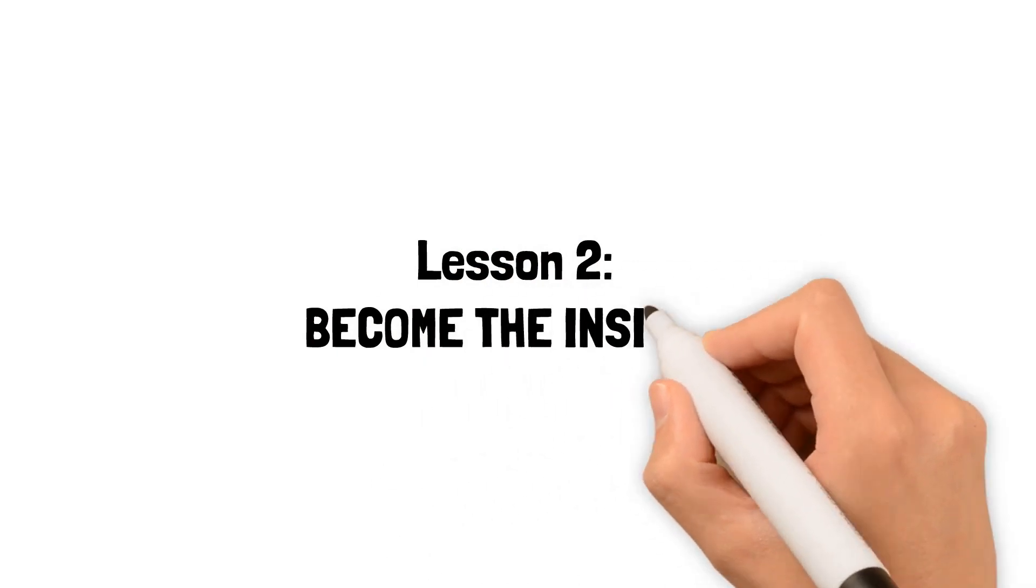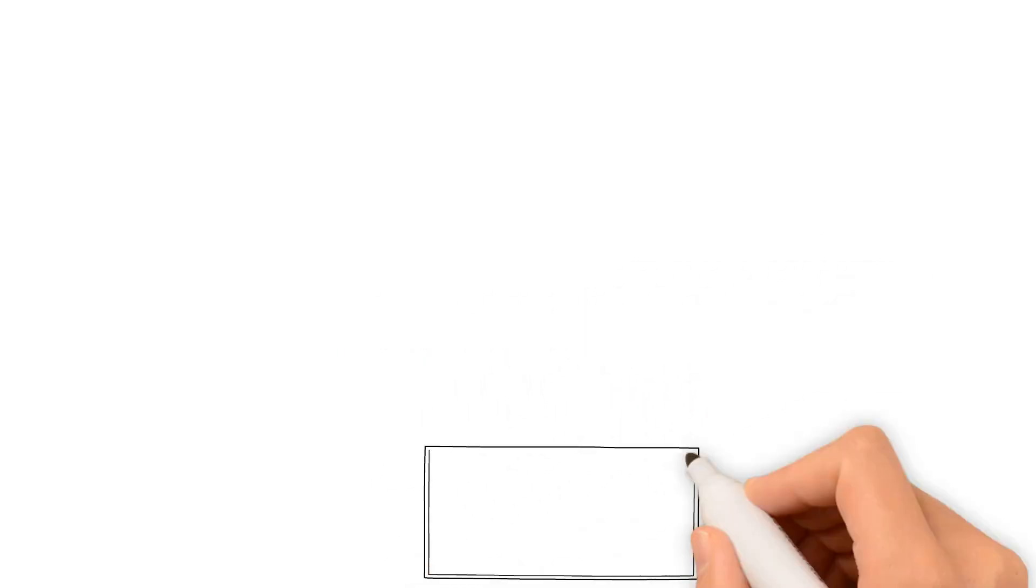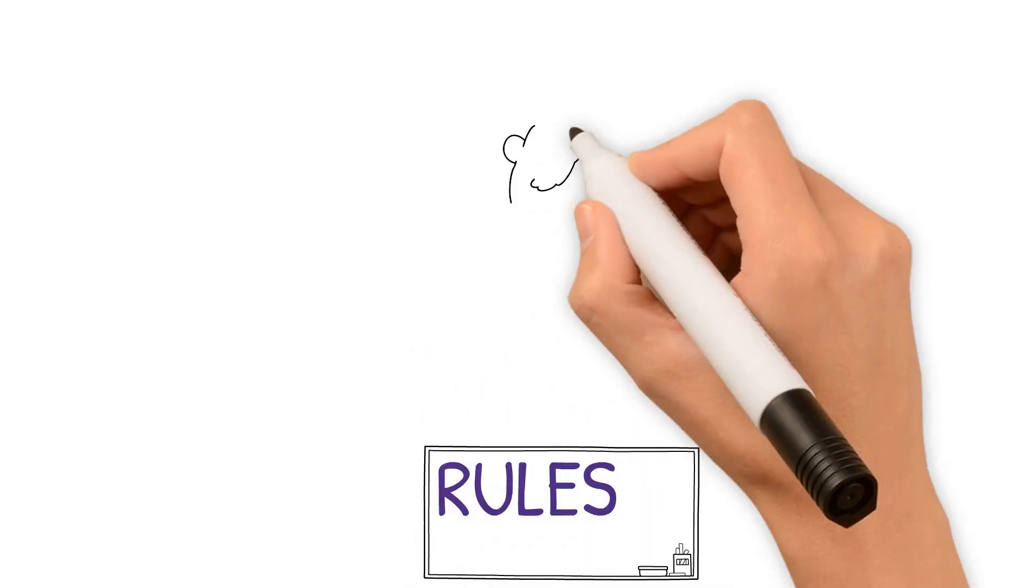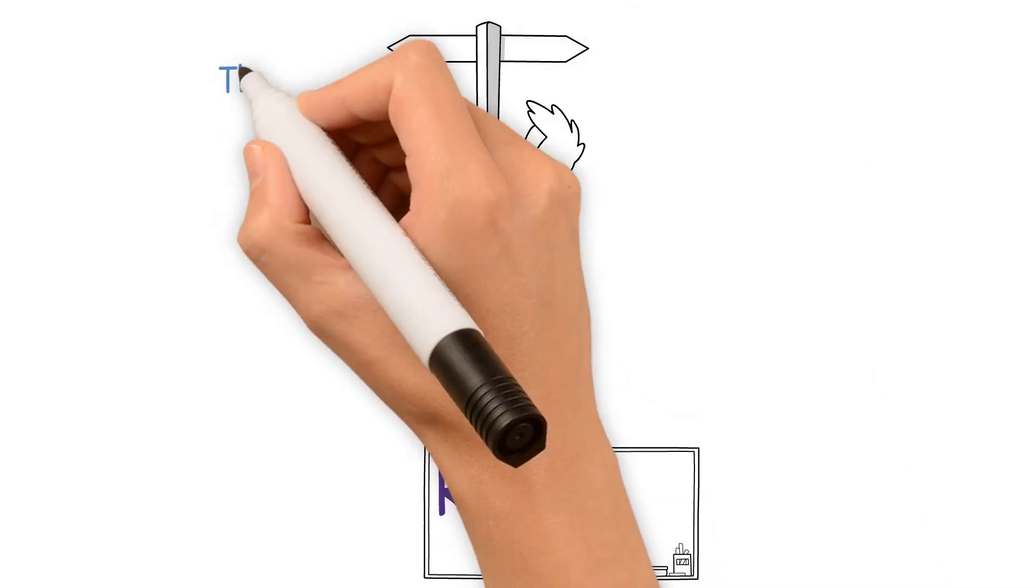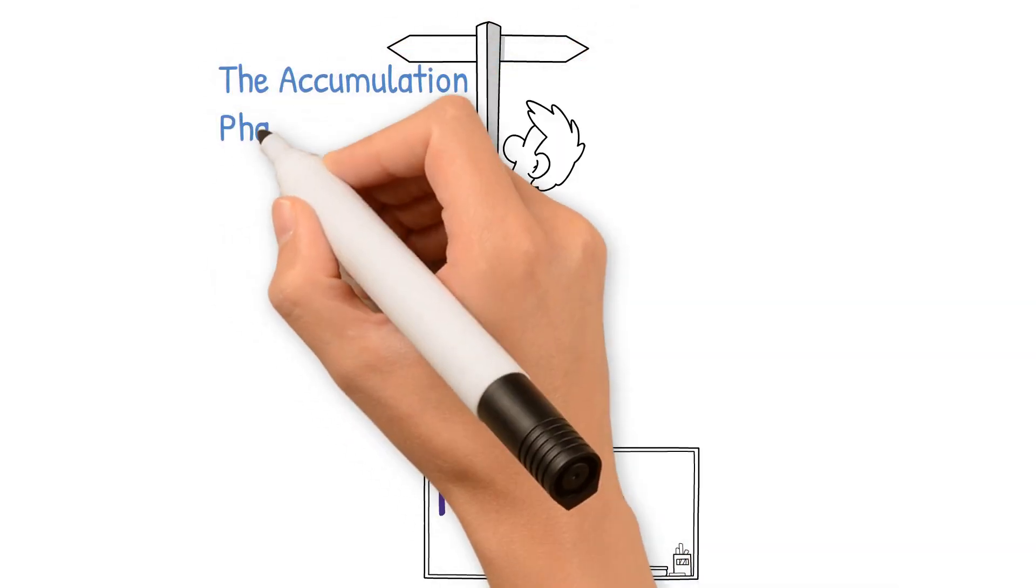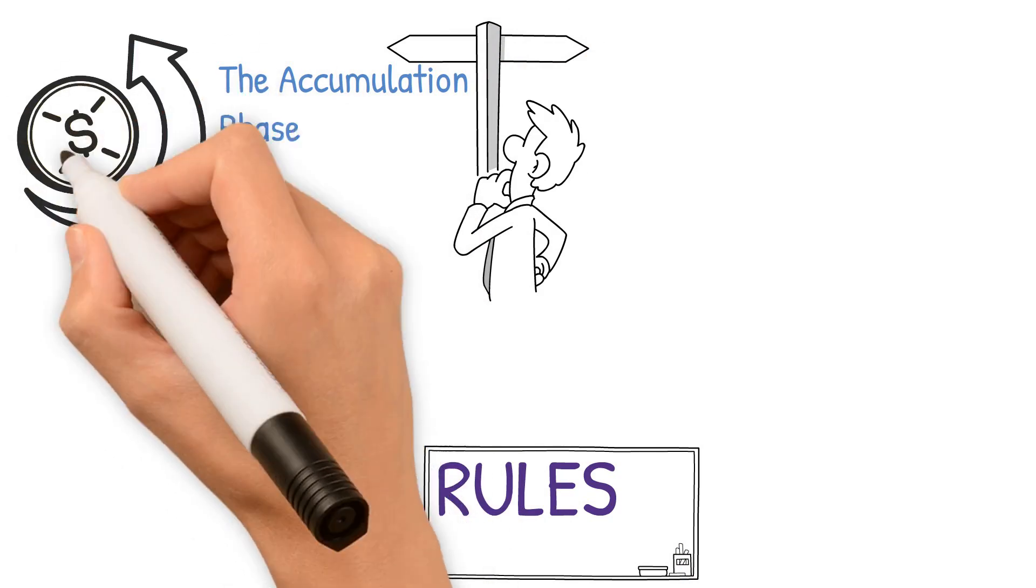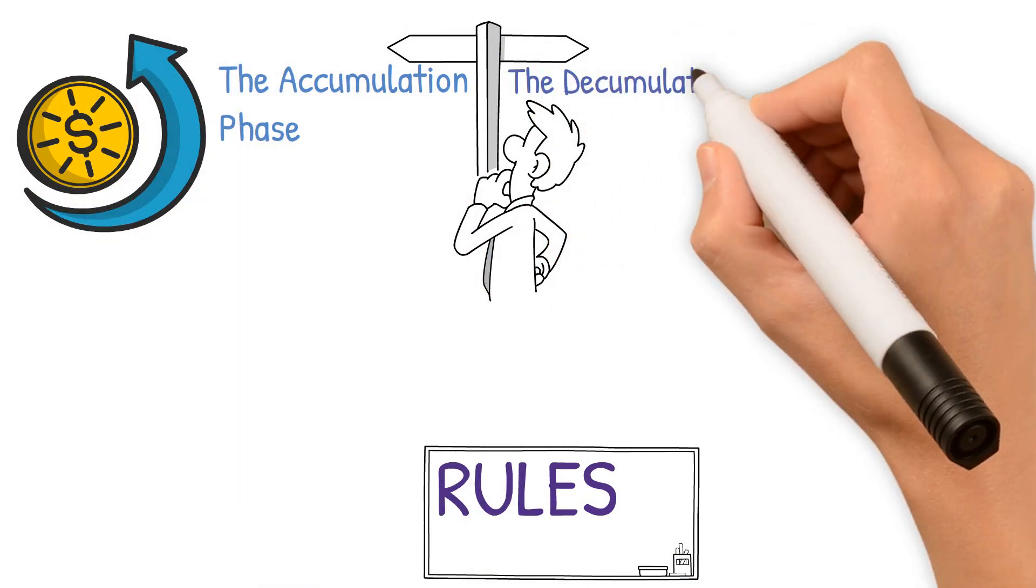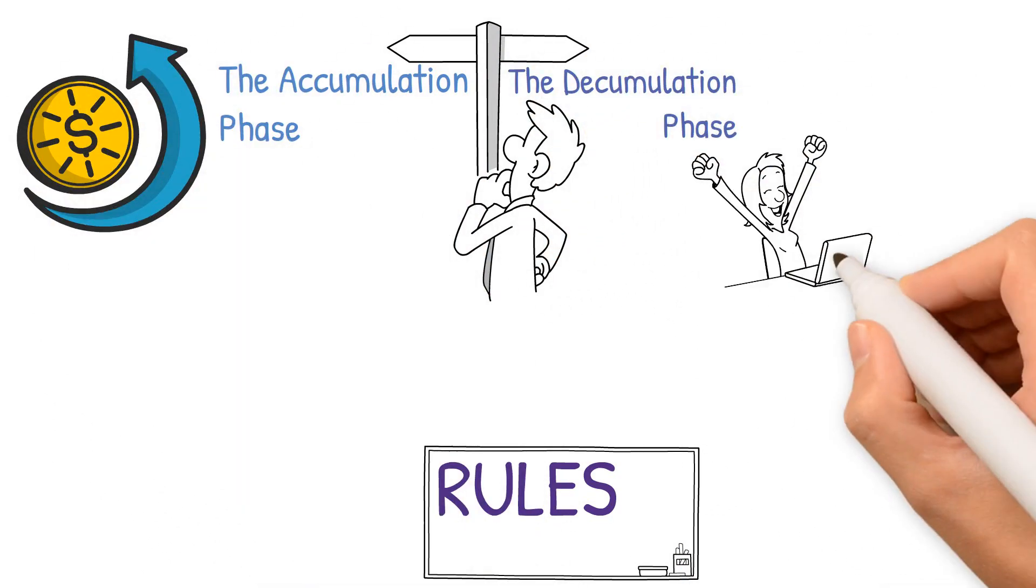Lesson 2: Become the insider. Know the rules before you get in the game. Life is divided into two stages: the accumulation phase, where we save and work towards our ambitions, and the decumulation phase, where we savor the rewards of our efforts.